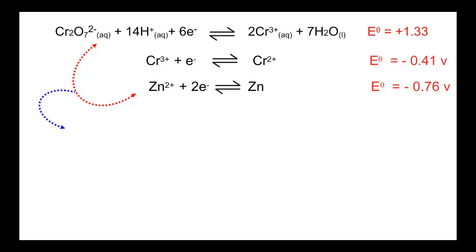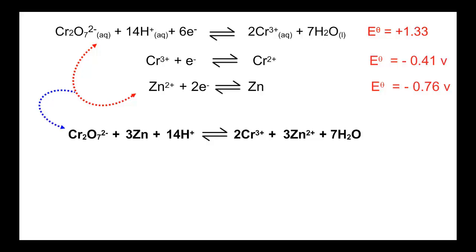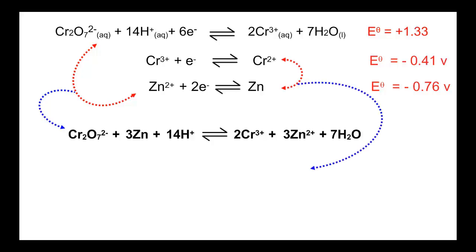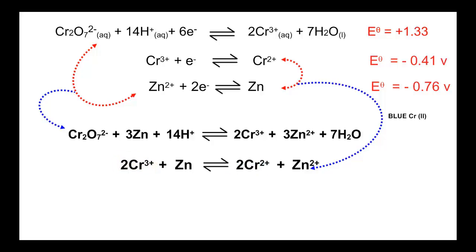Let's consider coupling the first with the third half-equation. Zinc has the lower reduction potential, so it will undergo oxidation and the equation is reversed. Then you add the two half-equations having balanced the electrons — you need to multiply the zinc half-equation by 3 to balance up the electrons, giving three Zn's on the left and three Zn2+ on the right. So if you were to warm a potassium dichromate solution with metallic zinc, you would expect it to be reduced at least to the plus-3 oxidation state. Considering whether it would be reduced further to plus-2: coupling the second and third half-equations, because zinc has a lower reduction potential, chromium-3 will indeed be reduced to chromium-2 — a blue-colored solution. So you'll go from the orange dichromate to the dark green chromium-3, and then further to the blue chromium-2 solution.